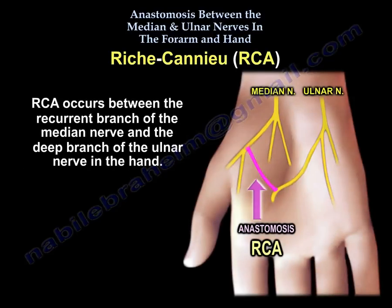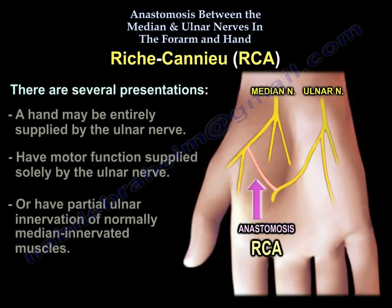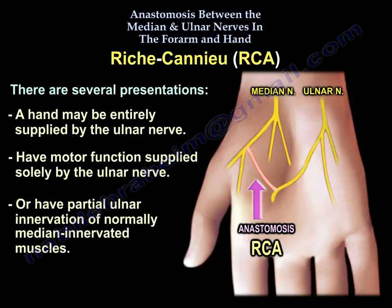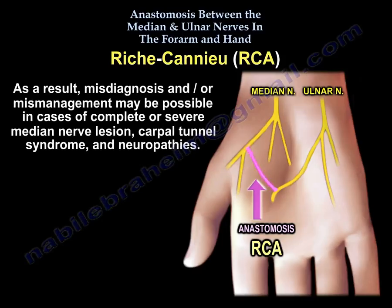Riche-Cannieu occurs between the recurrent branch of the median nerve and the deep branch of the ulnar nerve in the hand. There are several presentations: a hand may be entirely supplied by the ulnar nerve, have motor function supplied solely by the ulnar nerve, or have partial ulnar innervation of normally median-innervated muscles. As a result, misdiagnosis and/or mismanagement may be possible in cases of complete or severe median nerve lesion, carpal tunnel syndrome, and neuropathies.